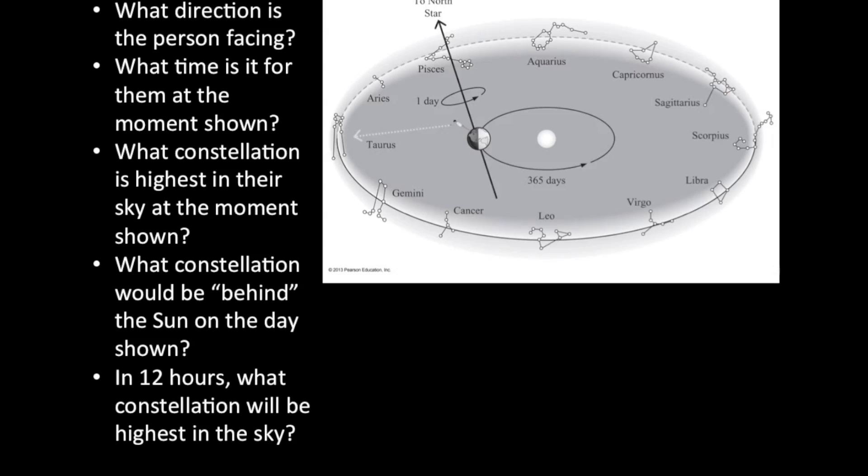The Earth is not going to move almost at all in 12 hours in its orbit. So it'll basically be in the same place. So when this person goes a complete 180 degrees on the Earth in its rotation, they'll be facing the Sun and the constellation that will be highest in their sky is Scorpius.